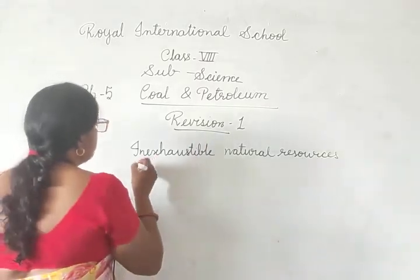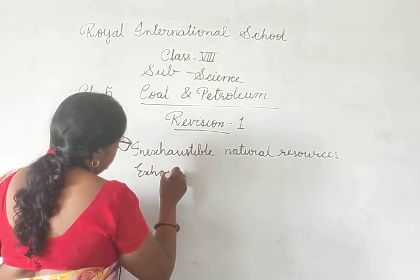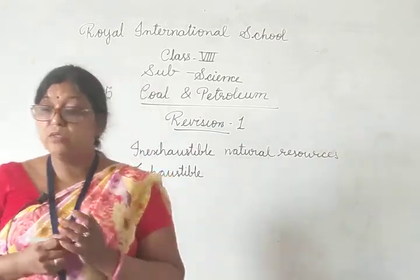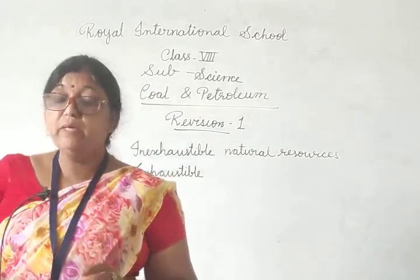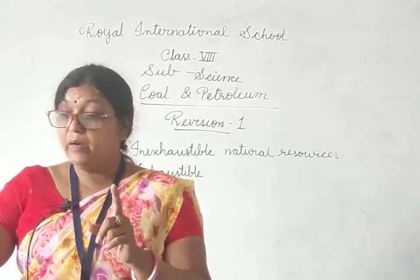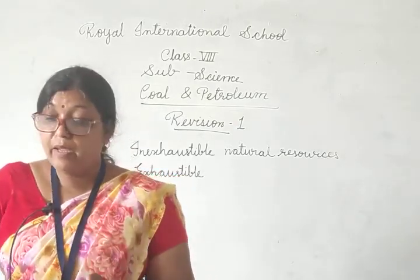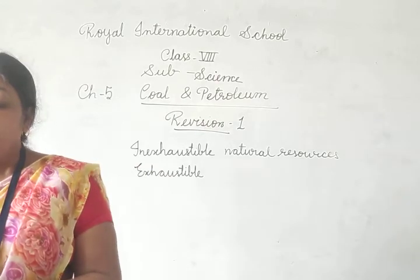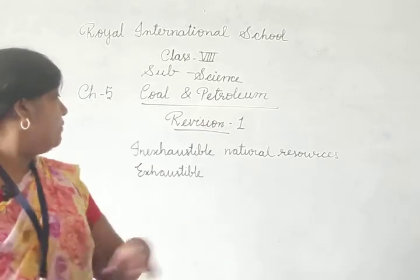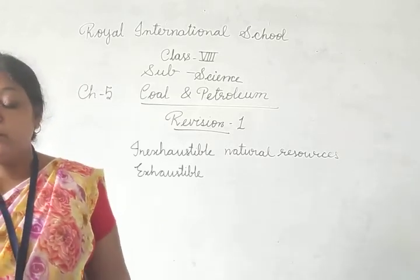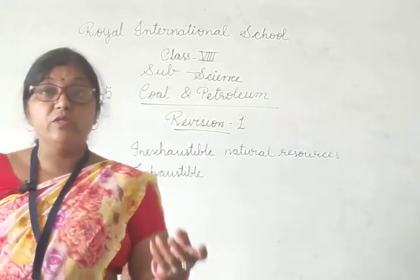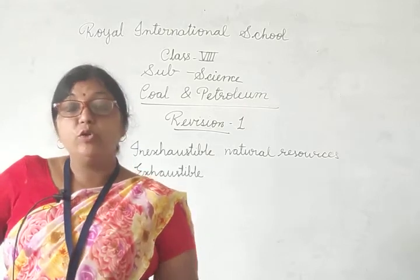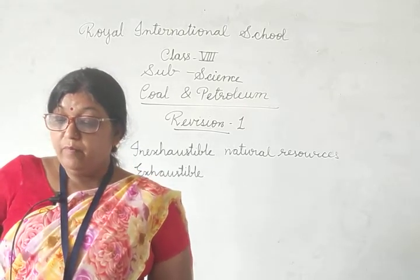Doosra aata hai aapka exhaustible natural resources — the resources which are available to human beings in a limited quantity and likely to be exhausted by various human activities in the future. These are known as the exhaustible natural resources. Jaise aapki forest hai, wildlife hai, all kinds of minerals — jaise ki coal hai, petroleum hai, natural gas hai.